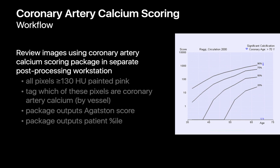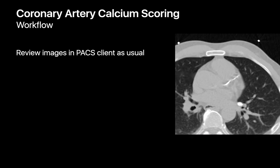Coronary artery calcium scores are also compared to people of matched age, gender, and race to provide a percentile. Finally, the CT images are read as a normal CT would, looking for incidental findings like lung nodules and lymphadenopathy.